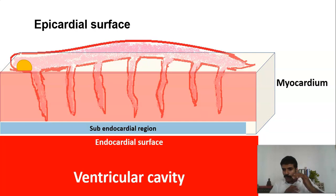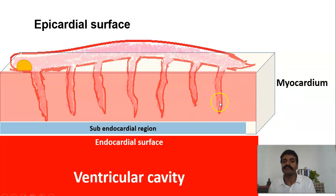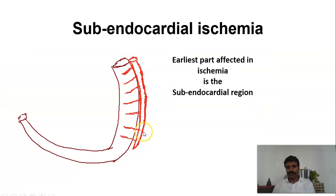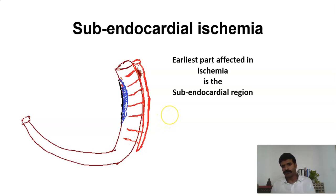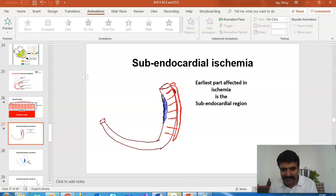Consider a condition of vulnerable plaque rupture. As the plaque ruptures and the obstruction increases, the first part of the myocardium affected is the sub-endocardial region. So if there is a partial block, the first region that is ischemic is going to be the sub-endocardial region. You might ask: how does this really affect the ECG? Remember that the ECG during the ST segment is flat — nothing happens during the ST segment normally.